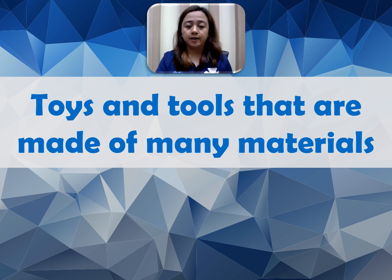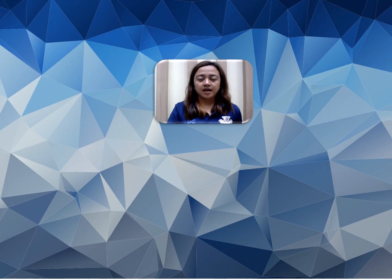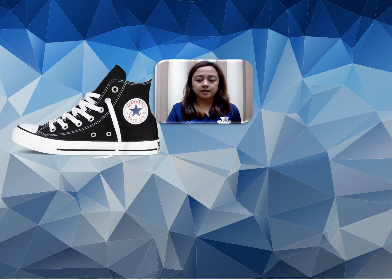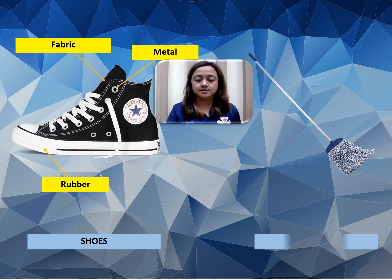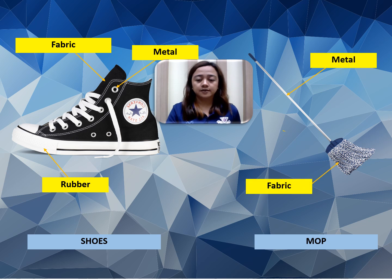Now let's look at toys and tools that are made of many materials — meaning two or more materials. For example, shoes can be made of fabric, metal, and rubber. Another example is a mop, which can be made of metal, fabric, and plastic. Those are some examples of things made of two or more materials.